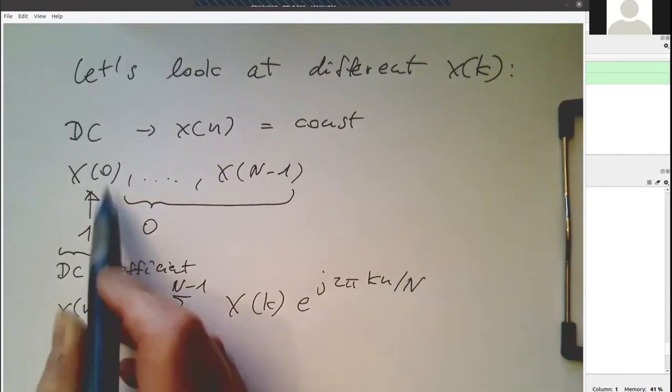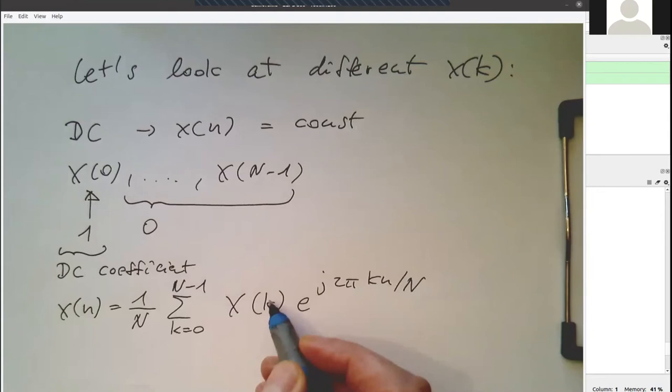So of this x of 0 here, the very first one here, this is only 1. So that's our DC coefficient, which goes in there. And so this means if we are applying this sequence here to the special case here, then what is left? Then we have 1 over n, and then only the very first coefficient here for k equals 0 is left.